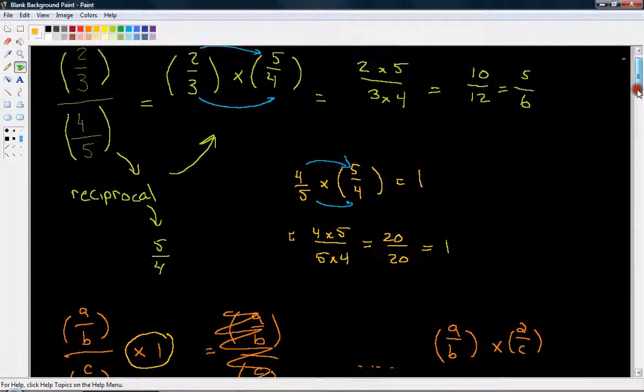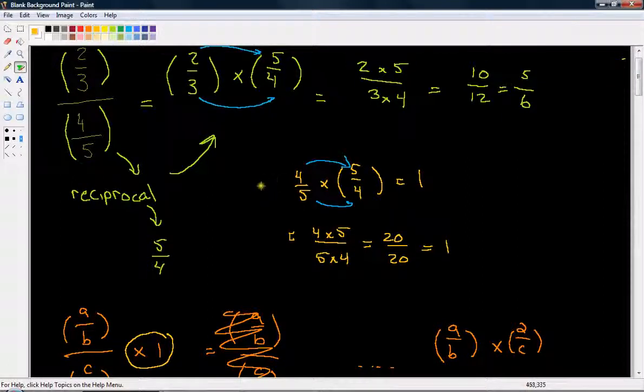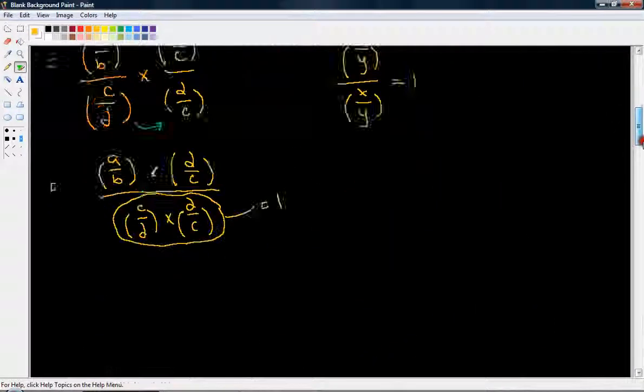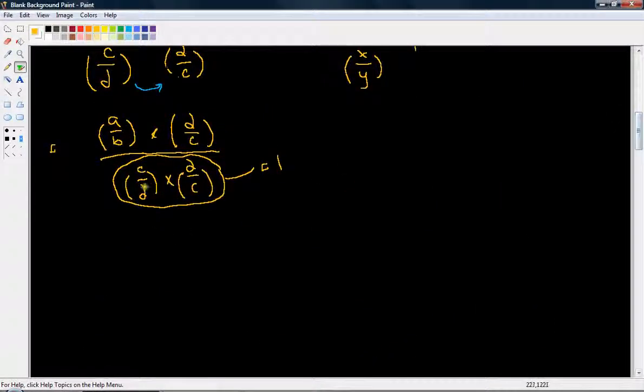Because that's the definition of the reciprocal. Whenever we multiply a number by its reciprocal, what we get is we get 1. When we have a number multiplied by basically the flipped of that number, we get 1. So the bottom what we have is 1. We have A over B times D over C divided by 1, because the product of these two numbers is 1.